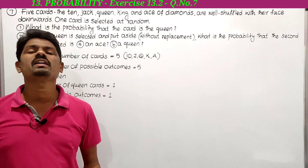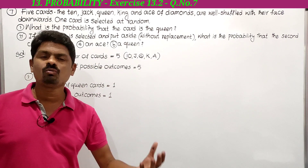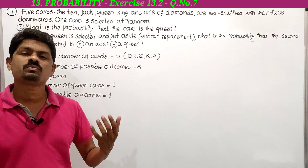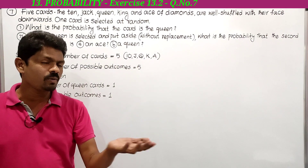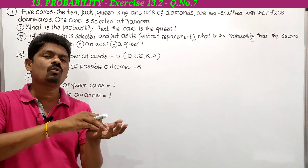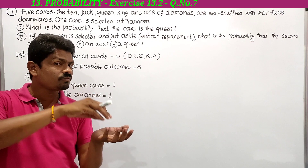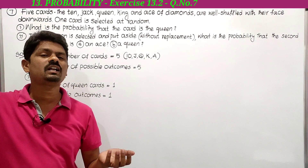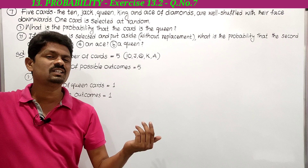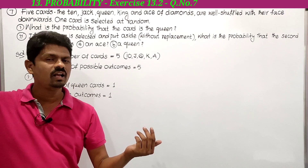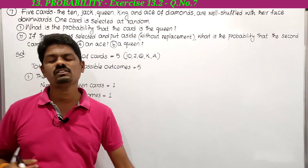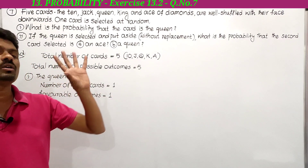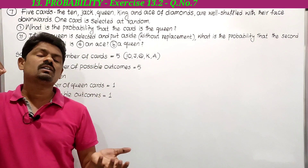So there are only five cards of diamonds: ten, jack, queen, king, and ace. If the selected queen card is put aside without replacement, the remaining cards are four only. From these four cards, we need to find the probability that the selected card is an ace and also a queen.